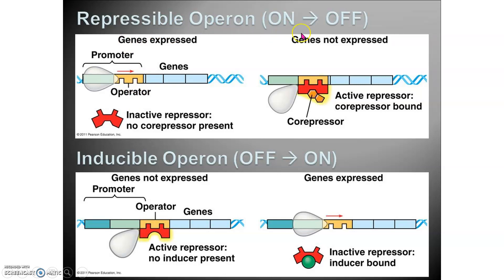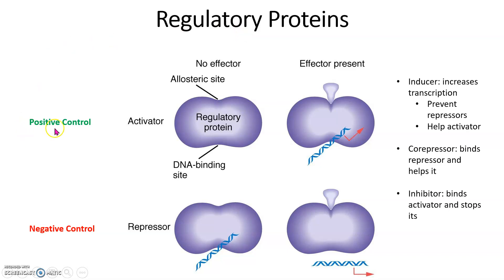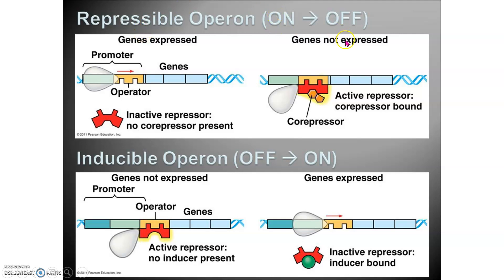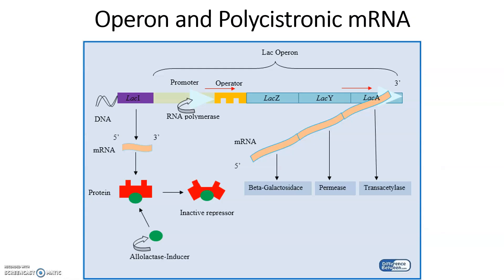A repressible operon is normally on, meaning the repressor is not bound to the operator. But if a co-repressor binds to the repressor, it changes the shape and allows it to bind to the operator, stopping transcription — turning it off. For an inducible operon, it's off when the repressor is bound to the operator. An inducer comes, binds to the repressor, changes its shape, makes it fall off, and transcription can occur. So: positive means activator, negative means repressor, repressible means normally on but can turn off, inducible means normally off but can turn on.